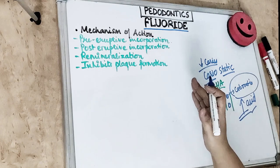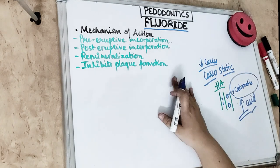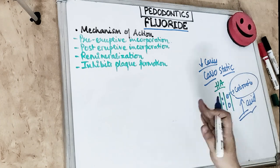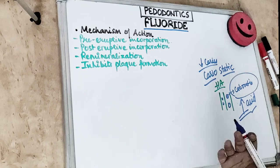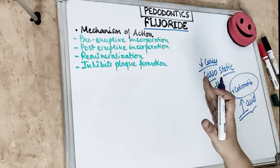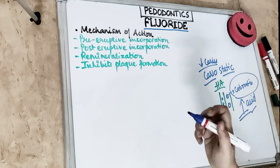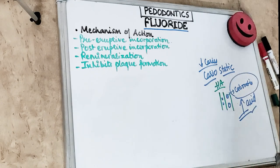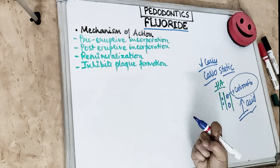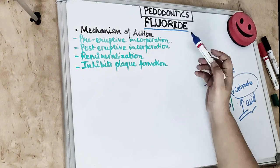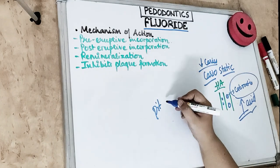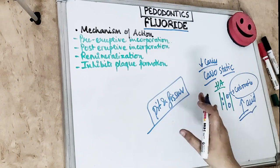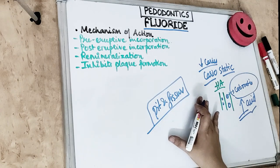The action of fluoride can be divided into pre-eruptive and post-eruptive incorporation. Pre-eruptive exposure to fluoride produces teeth that are more resistant to caries. Before a tooth erupts and develops, we make it resistant to caries by making the pits and fissures shallower. If the pits and fissures are shallow, food sticks less, and thus caries are reduced.